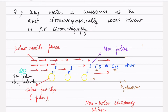In reverse phase chromatography, we have a polar mobile phase and a nonpolar stationary phase. Whenever a nonpolar drug molecule passes through this column, it gets attached to the nonpolar stationary phase, which delays the elution of this nonpolar drug molecule.